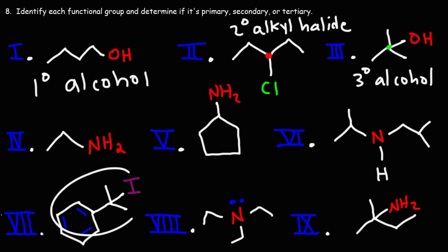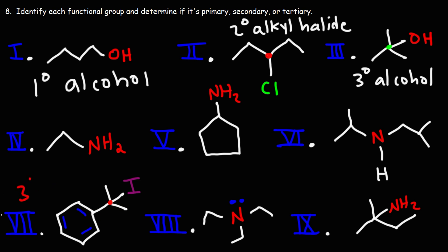Let's focus on this one. This is another alkyl halide — more specifically, it's a benzylic halide because the iodine atom is on the benzylic carbon. One carbon away from the benzene ring is known as the benzylic position. The type of alkyl halide depends on the carbon to which the iodine is bonded. That carbon is attached to three other carbon atoms, so this is a tertiary benzylic halide.